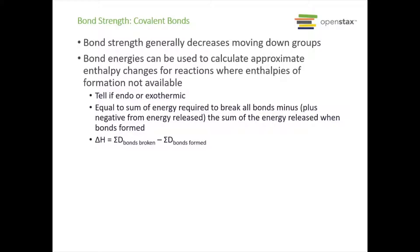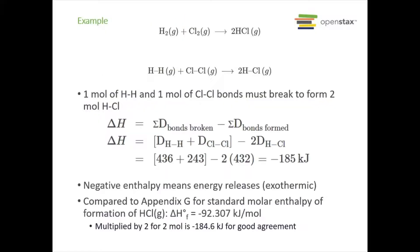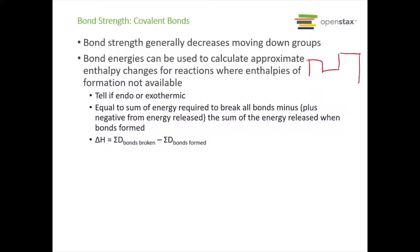Bond strength itself tends to decrease as we move down groups on the periodic table. For instance, fluorine bonds stronger to something like hydrogen than chlorine, then bromine, then iodine. We can use these bond energies to calculate the approximate enthalpy changes for reactions where we might not have an enthalpy of formation immediately available. If you're looking in appendix G for some enthalpies of formation and you don't see it for a specific molecule, you can use the bond energies for the different bonds present to get an approximate enthalpy change.